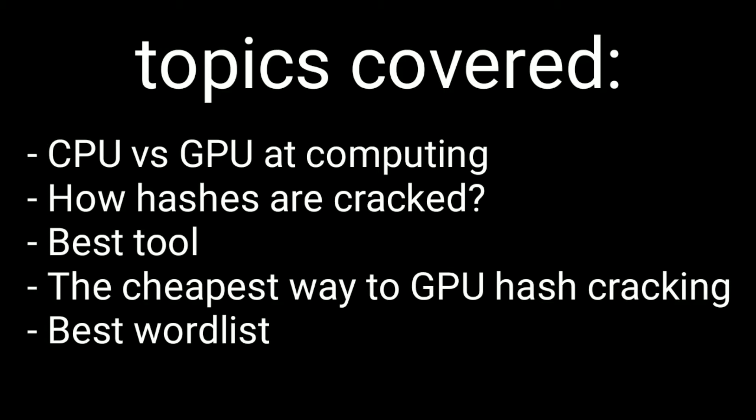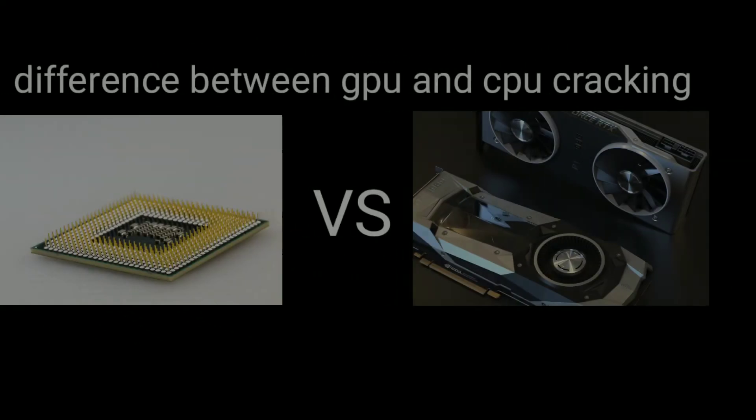Before we get started, let's look at what we are going to be covering. We are going to look at topics such as CPU versus GPU computing, how hashes are cracked, the best tools used for cracking, the cheapest way to GPU cracking, and the best wordlists.